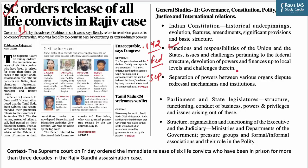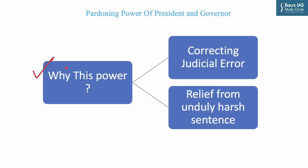For example, under GS Paper 2: functions and responsibilities of the Union and states, issues pertaining to the federal structure, separation of power between various organs and disputes redressal mechanisms, parliament and state legislature structure, functioning and conduct of business, and structure, organization and functioning of the executive and judiciary. In today's discussion we will look into the pardoning power of the Governor and the President — why these powers have been provided, what these powers are, any parallel powers, judicial interpretations, a brief timeline of the case, and the significance of this judgment.